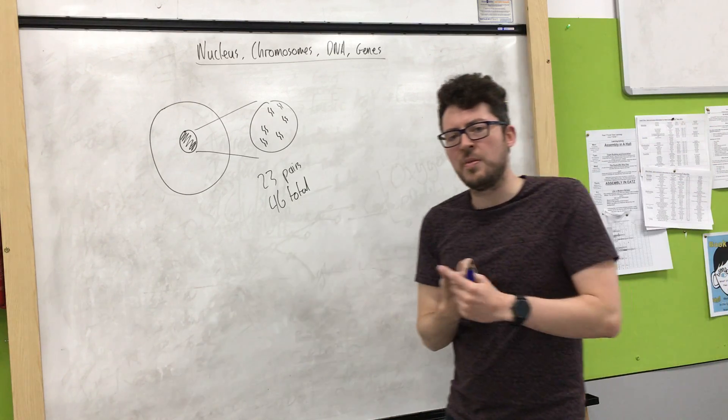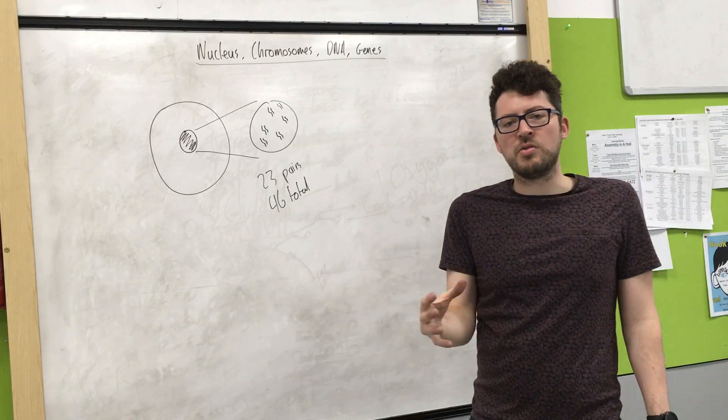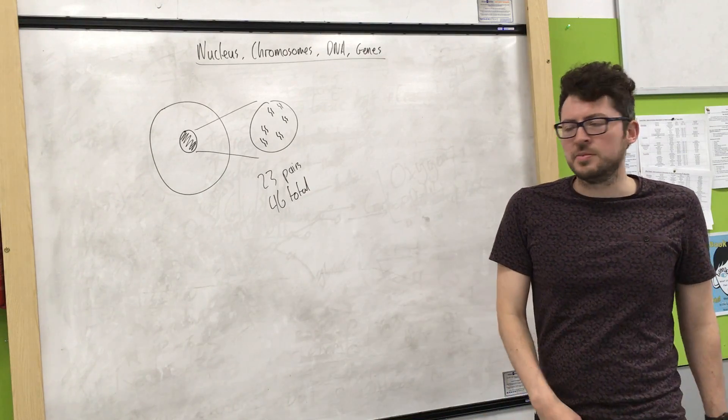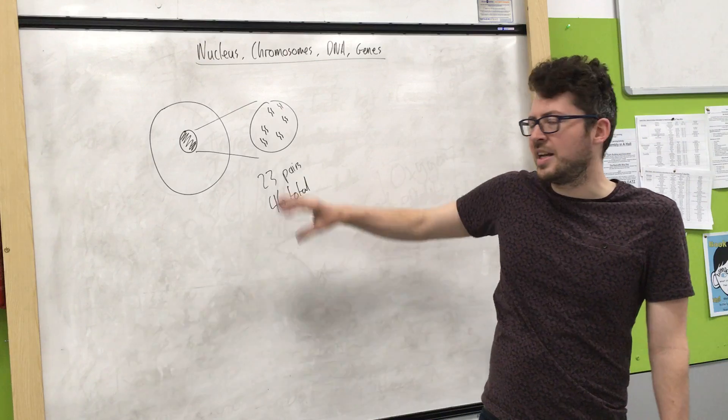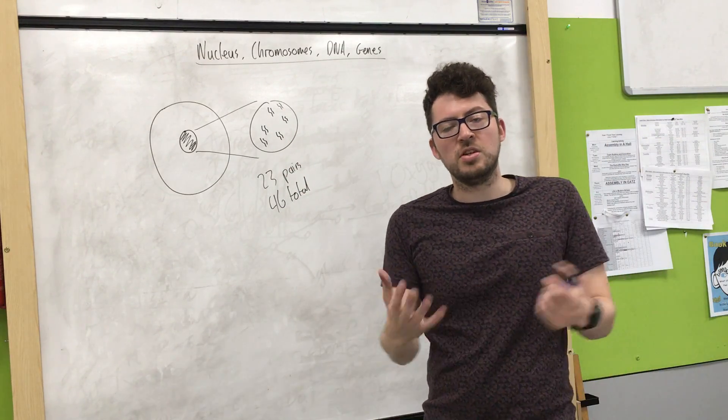So we get one set of 23 from our mother, one set of 23 from our father, giving us a total of 23 pairs, or 46 chromosomes in total. I've simplified it here. This could be another organism with a different number of chromosomes to humans.